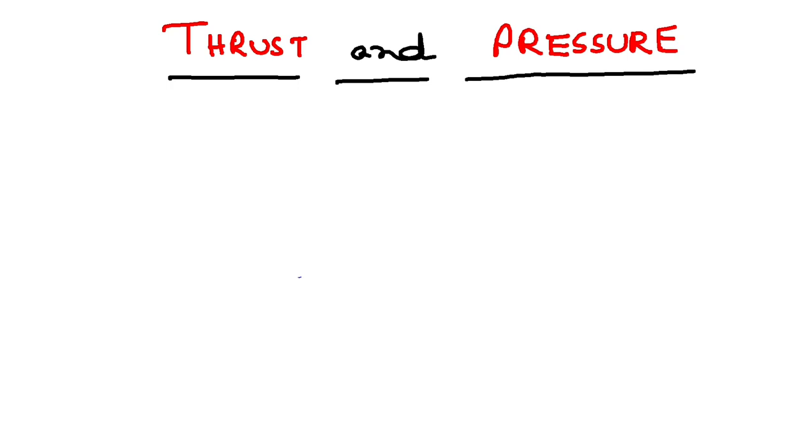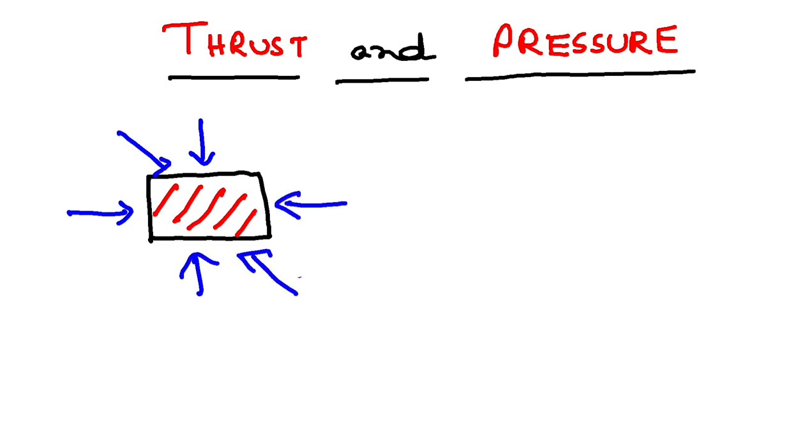Now what is thrust? In order to understand that, let us take the example of an object. Let's say there is an object rectangular in shape and you are being asked to apply force on it. So you can apply force from any random direction, from here also, from here also, this way, this way, in any random way force can be applied on this particular object.